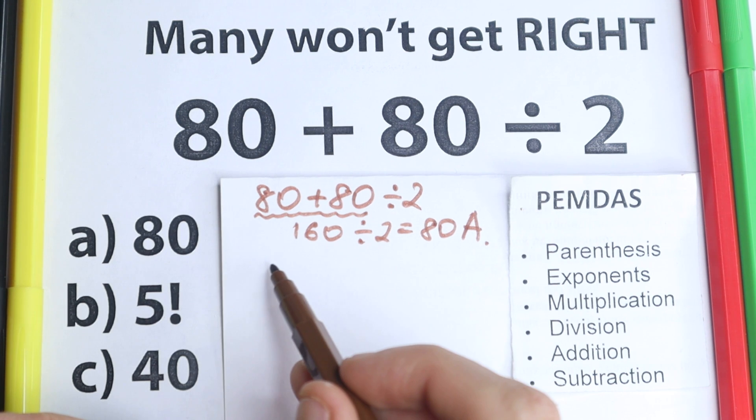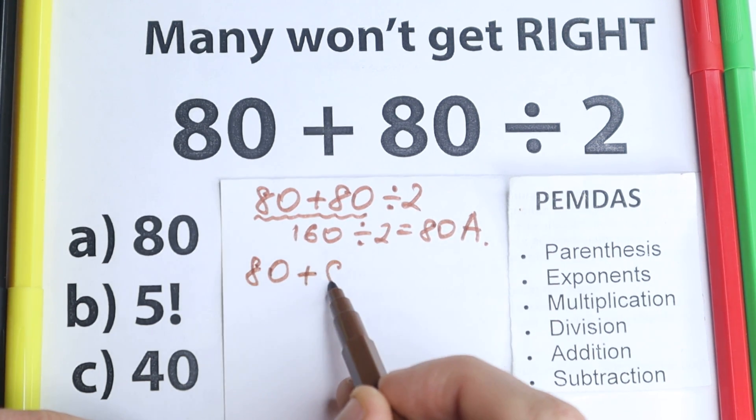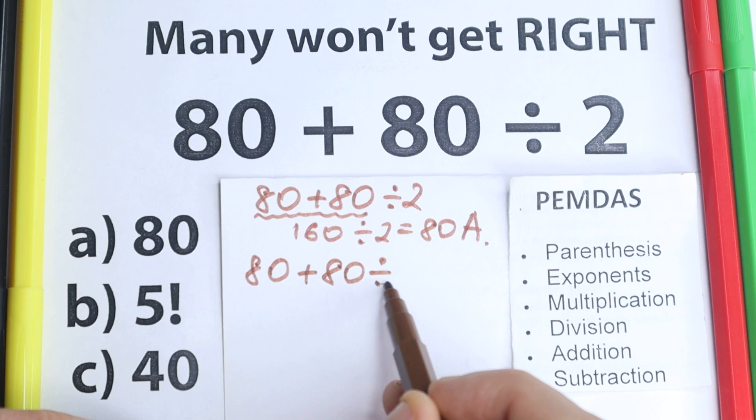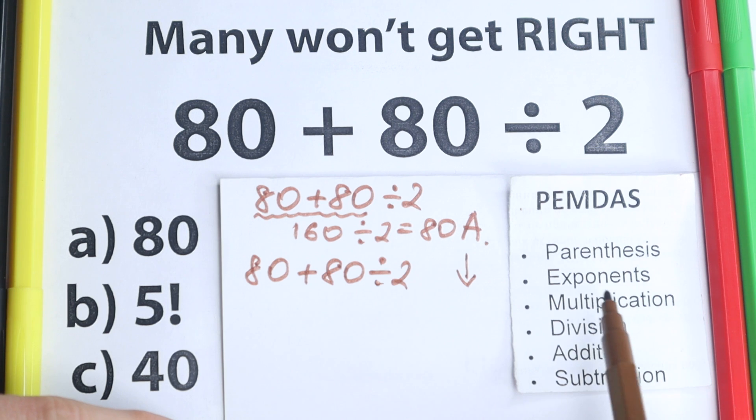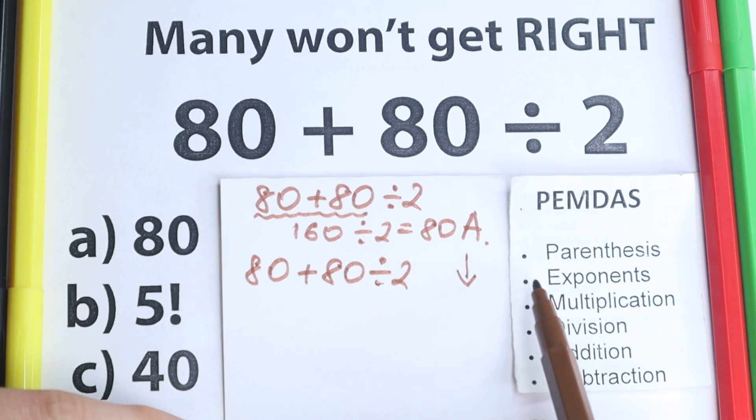First of all we need to know, I re-write this problem, we have 80 plus 80 divided by 2. And let's look at this PEMDAS. This PEMDAS works from the top to the bottom right here and we need to go step by step with these steps.